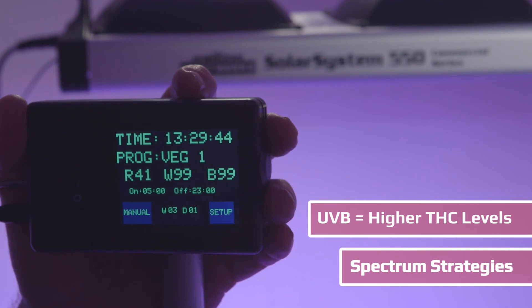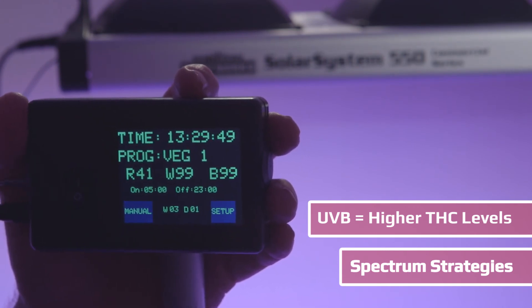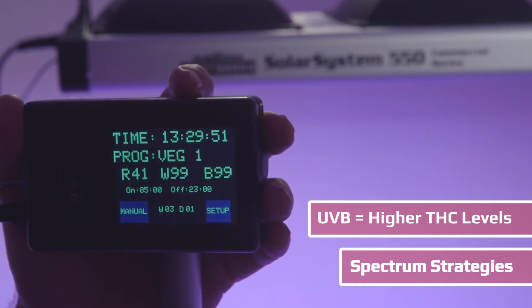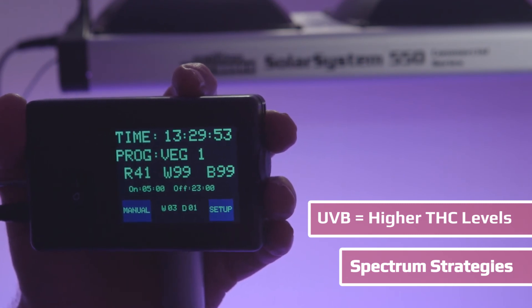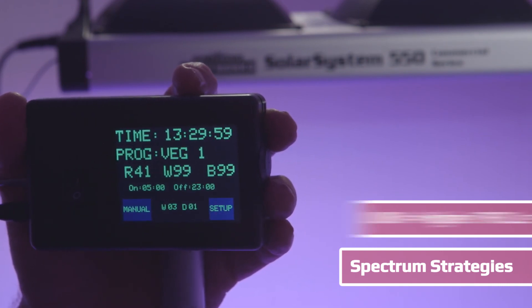When it senses certain levels of UVB in the final stages of bloom, it emits a chemical which coats the trichomes as a protective filter against UVB. This protective chemical is THC, so you can actually boost THC levels by using supplemental UVB. That's something we also offer in the Solar System series.